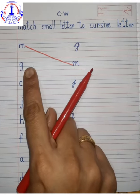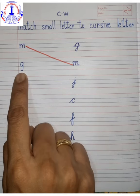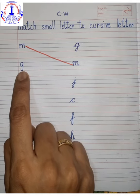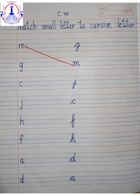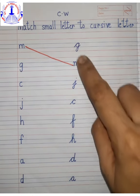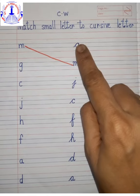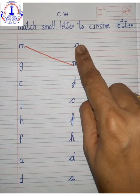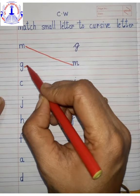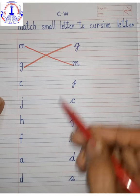Now which letter is this? This is small letter g. We have to match with cursive letter g. Now where is cursive letter g? Over here — small g, cursive letter g. Now we are going to match over here.